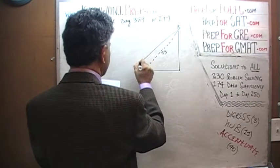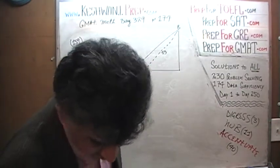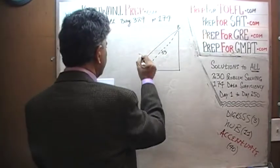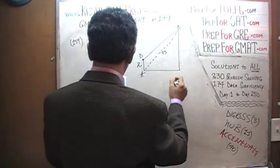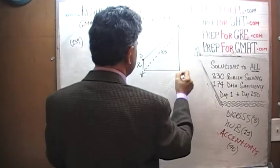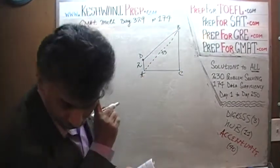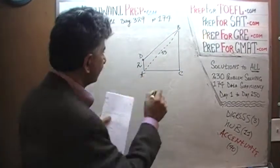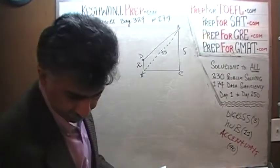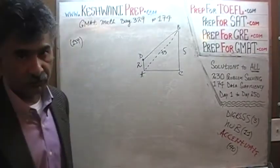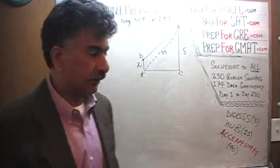We are further told that this distance — let's call it A to D — is 2. We have points A, B, C and D. We are also told that this distance is 5. So far so good. The question is very straightforward: we simply have to figure out the area of this trapezoid.